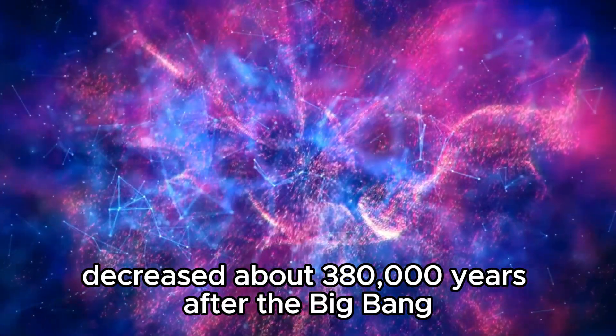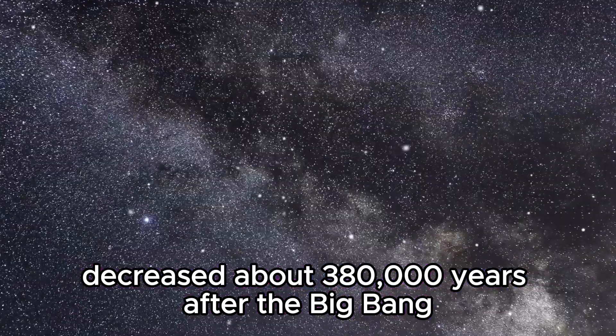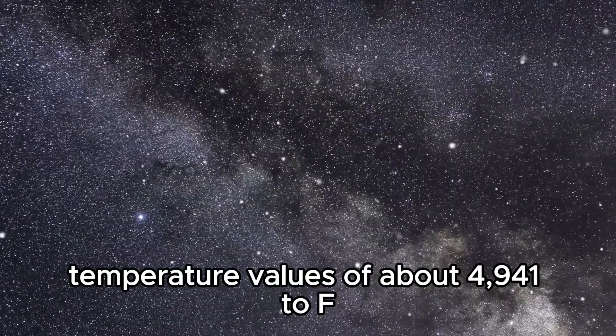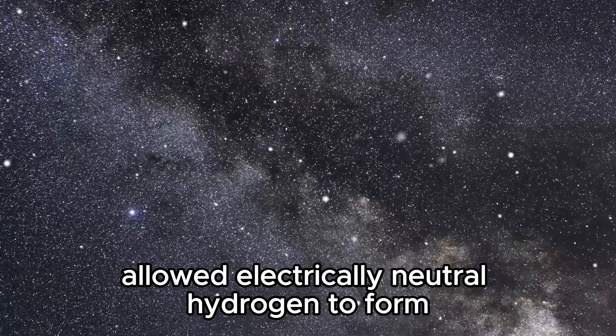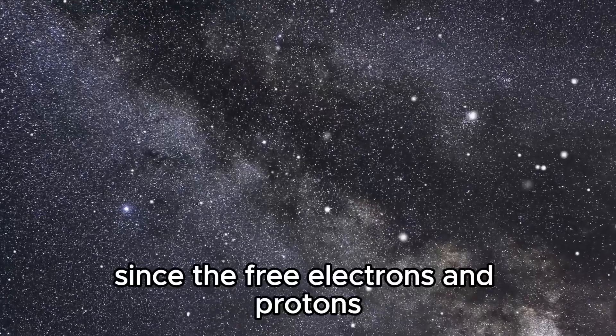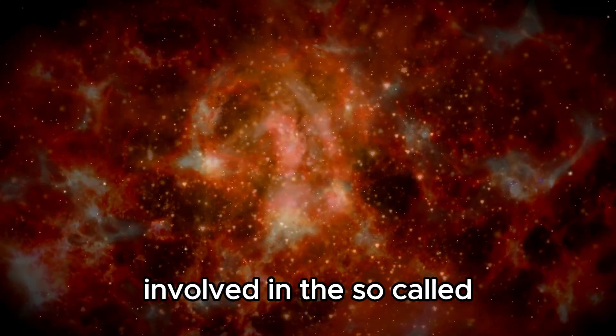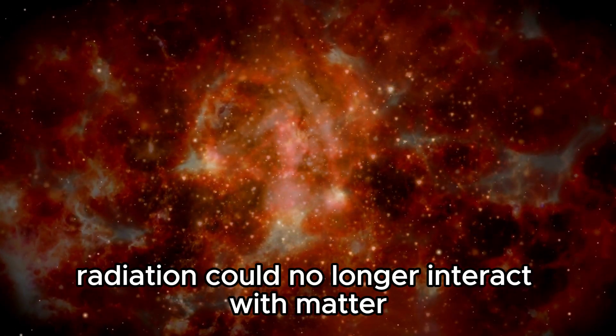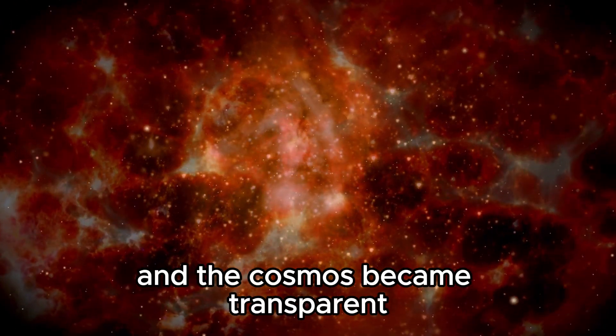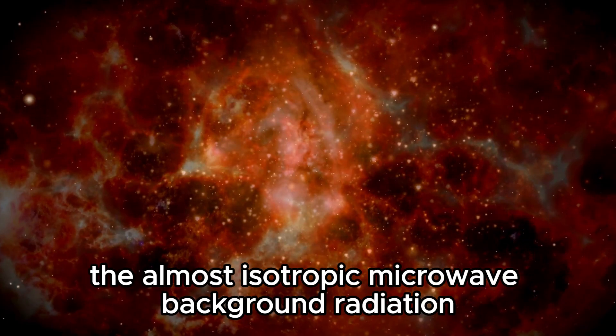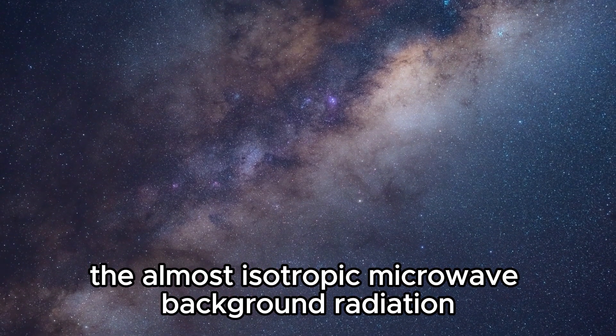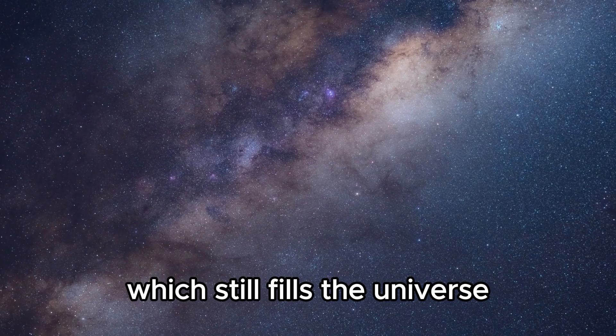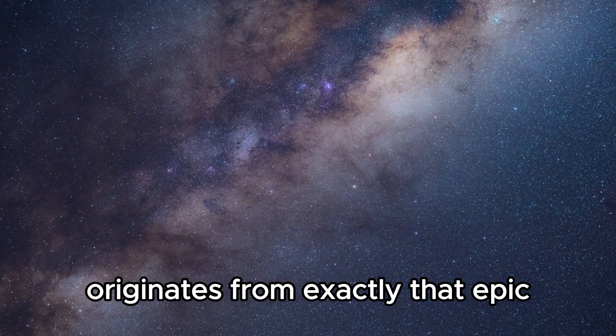About 380,000 years after the Big Bang, temperature values of about 4941°F allowed electrically neutral hydrogen to form. Since the free electrons and protons involved in the so-called recombination were now missing, radiation could no longer interact with matter and the cosmos became transparent. The almost isotropic microwave background radiation, which still fills the universe, originates from exactly that epic.